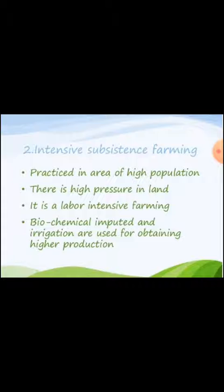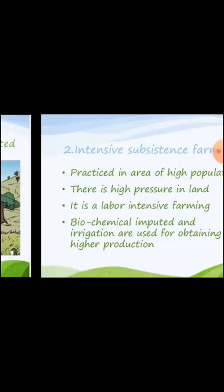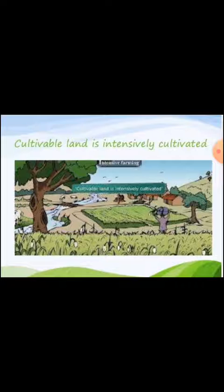Intensive subsistence farming is very different from primitive farming because it uses modern methods and modern equipment — high yielding variety of seeds, fertilizers, insecticides, pesticides, etc. Biochemical inputs and irrigation are used for obtaining higher production. In this image you can see the cultivated land is intensely cultivated.